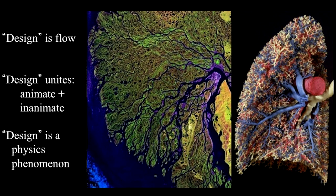Design happens when something is flowing, and at the same time that something is free to morph, like the channel of a river. This phenomenon, design, unites the animate with the inanimate — the river delta with the human lung. This is a big thing. It makes design a big phenomenon, a phenomenon of all physics, not of a particular domain such as biology or river morphology or technology.